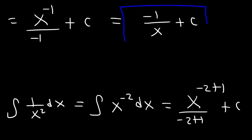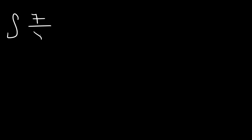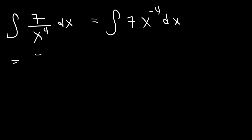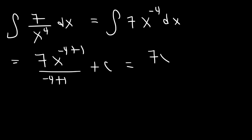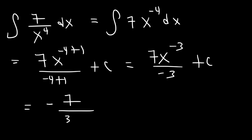Anytime you have a rational function like this one, make sure to rewrite it. For example, let's integrate 7 over x to the fourth power. First rewrite it as 7x raised to the negative 4, then use the power rule: negative 4 plus 1 divided by negative 4 plus 1, plus c. Negative 4 plus 1 is negative 3, so this equals negative 7 divided by 3x to the third power plus c. That's the final answer.